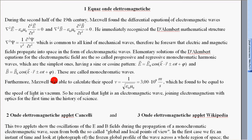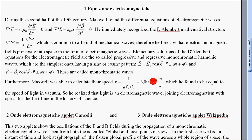Furthermore, Maxwell was able to calculate the speed v = 1/√(ε₀μ₀), equal to three times ten to the eight meters per second, which he found to be equal to the speed of light in vacuum.